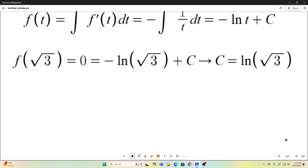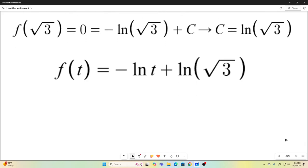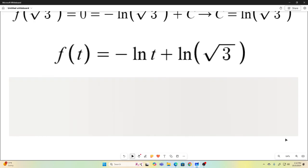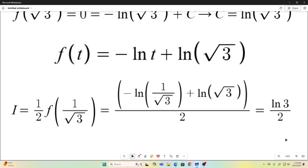Plugging that back in, we have our final expression for f of t: negative natural log t plus natural log square root of 3. Now recall that if we evaluate f at 1 over square root of 3 and take half of it, we get our original integral. So I plugged in t equals 1 over square root of 3 and took half of it.